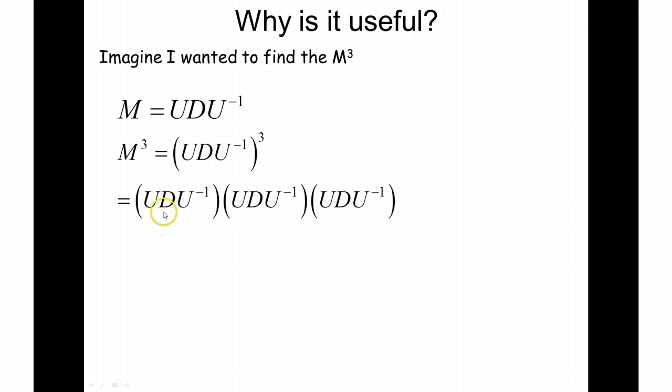If you've managed to do that, what you should have ended up with, well, if you would have noticed that I can rewrite this in this form here. And the inverse of U multiplied by U, well that's just going to give me my identity matrix.